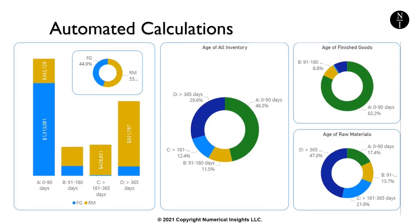I've done manual calculations here so you can see how to calculate inventory age, but depending on where you store your inventory and purchasing records, these calculations can be automated. What's shown here is an inventory age dashboard which refreshes its calculations multiple times per day, providing the company's leadership not only with the detailed calculations I just demonstrated, but also an overall picture of whether older product is a finished good, a raw material, and how much cash is tied up in older inventory.